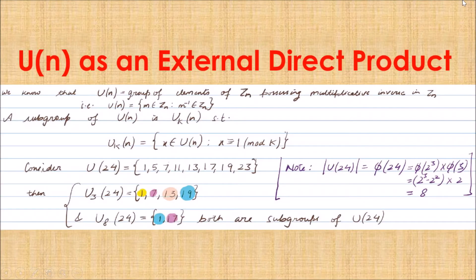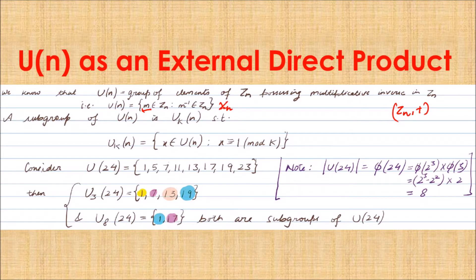The topic of this video is U(n) as an external direct product. U(n) is a group of elements of Z_n which possess multiplicative inverses. Z_n is an additive group, so there is no question to search for elements with multiplicative inverses, though a few elements of Z_n still possess multiplicative inverses. If you collect all those elements and put them inside a single set, that set is a group in itself under multiplication modulo n.